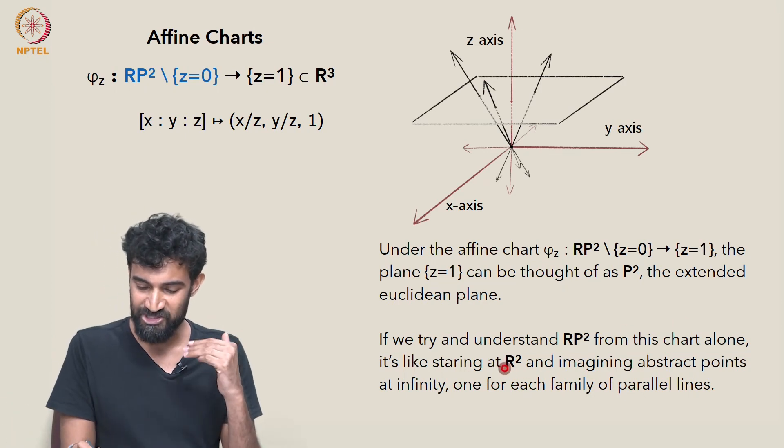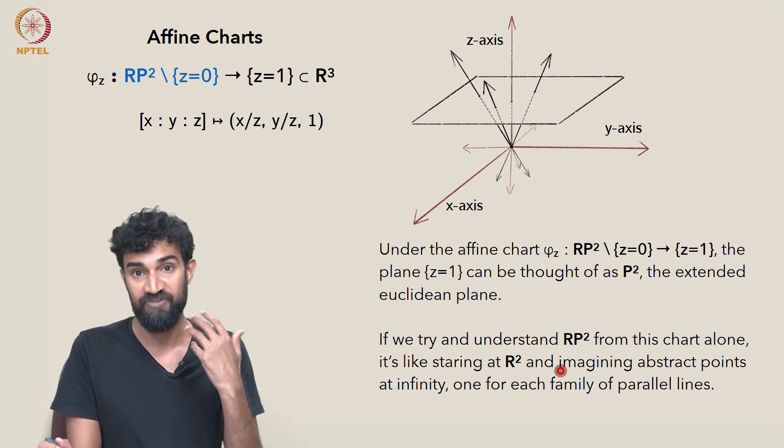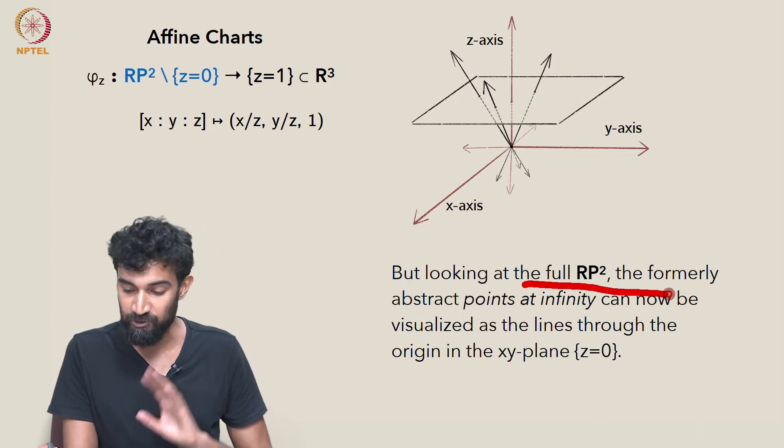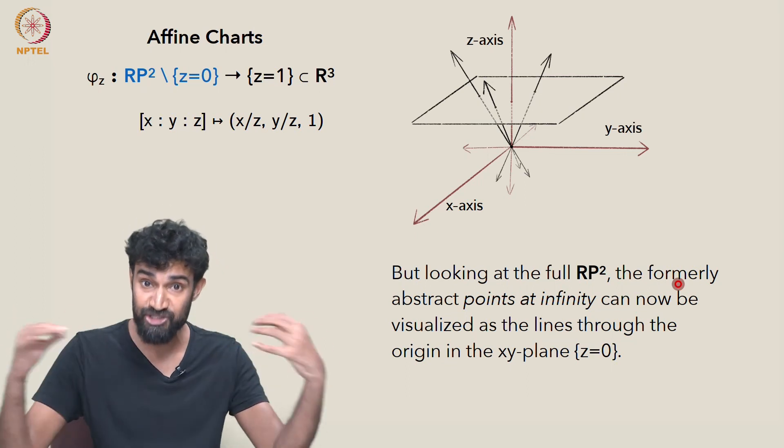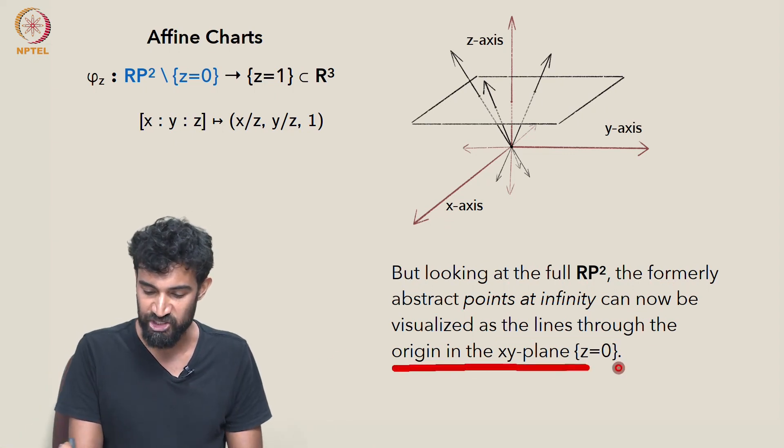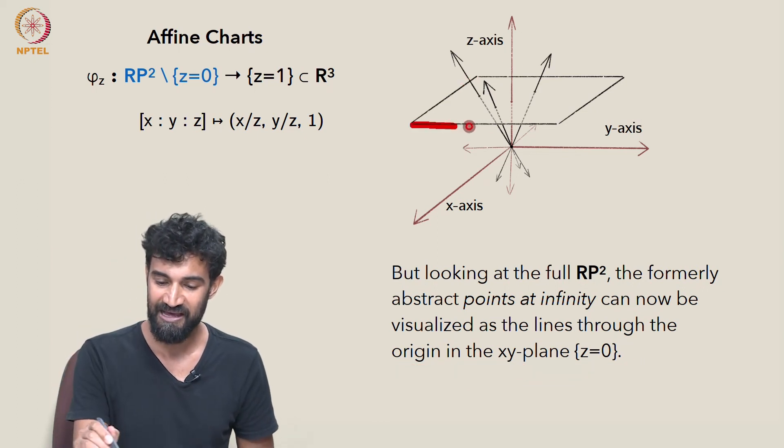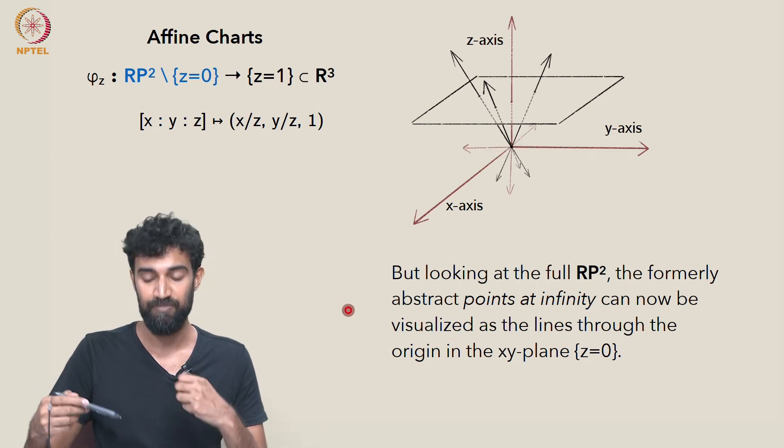And we're really just then staring at R² and imagining abstract points at infinity, one for each family of parallel lines. But we can also look at the full RP². And suddenly, the formerly abstract points at infinity that we've always been imagining lying out there can now be visualized as lines through the origin in the x, y plane z equals 0. So we can think of this affine chart image z equals 1 plus all of these extra lines through the origin in the plane z equals 0 together making up RP².